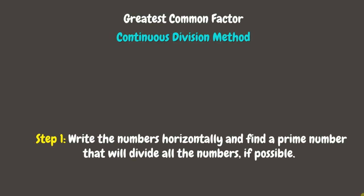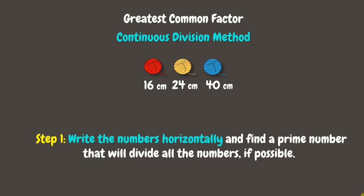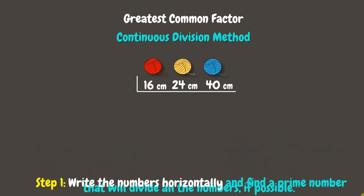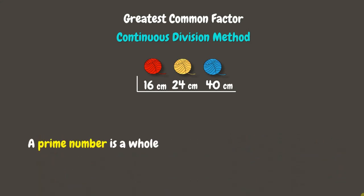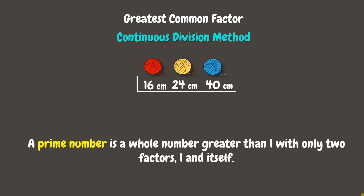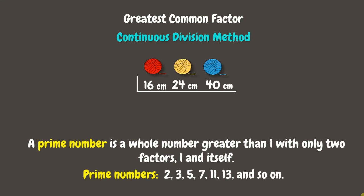The given lengths are 16 cm for red yarn, 24 cm for yellow yarn, and 40 cm for blue yarn. Next, let's find a prime number that will divide all the numbers if possible. Remember, a prime number is a whole number greater than 1 with only 2 factors, which are 1 and itself. Prime numbers include 2, 3, 5, 7, 11, 13, and so on.